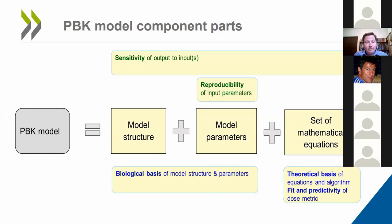This slide also gives another way of thinking about the validity of PBK models. For those familiar with the traditional OECD definition of validation from guidance document 34 — where validation is defined as the assessment of the reliability and relevance of a method or model for a particular purpose — you can think of some attributes (in green) as related to reliability, and attributes at the bottom (in blue) as linked to the relevance of the model. Reliability and relevance are the two main strands of model validity.